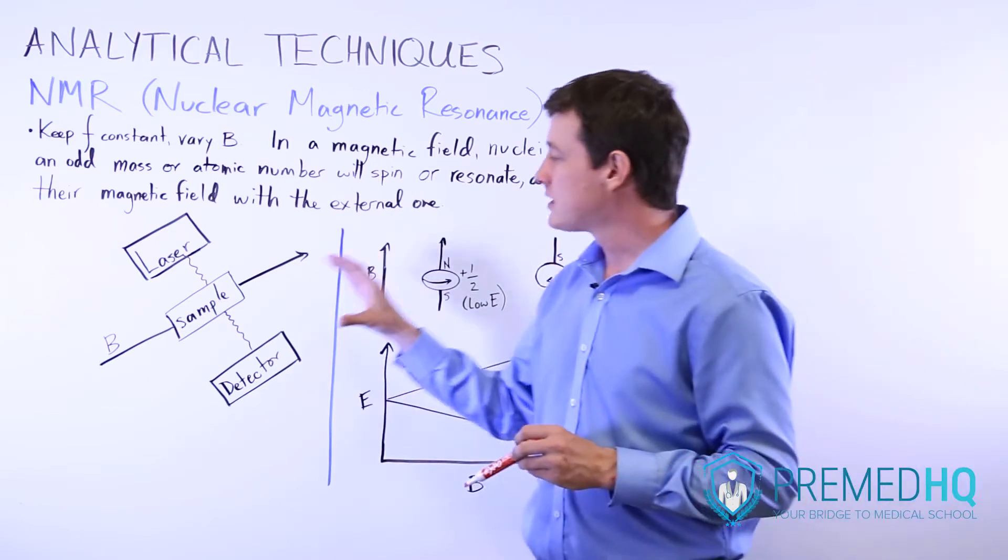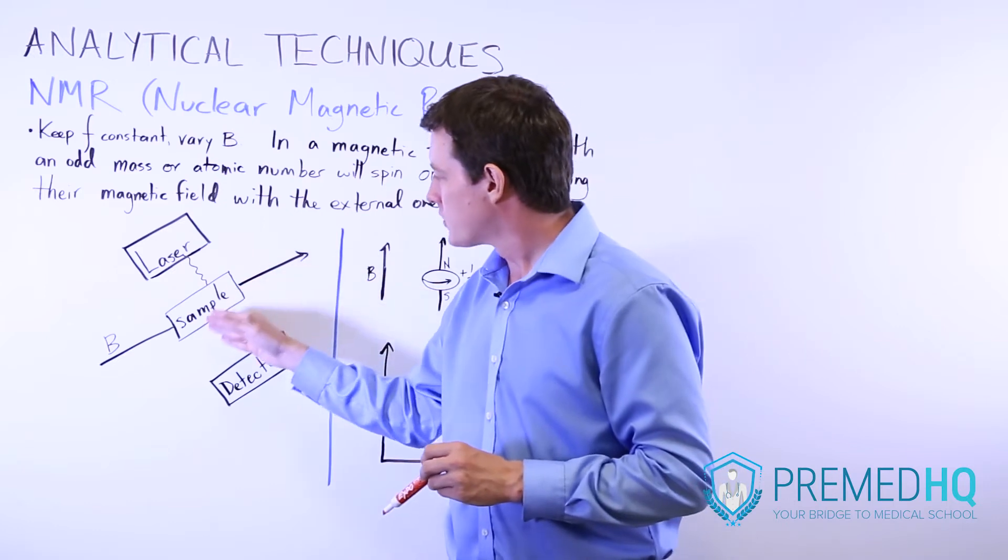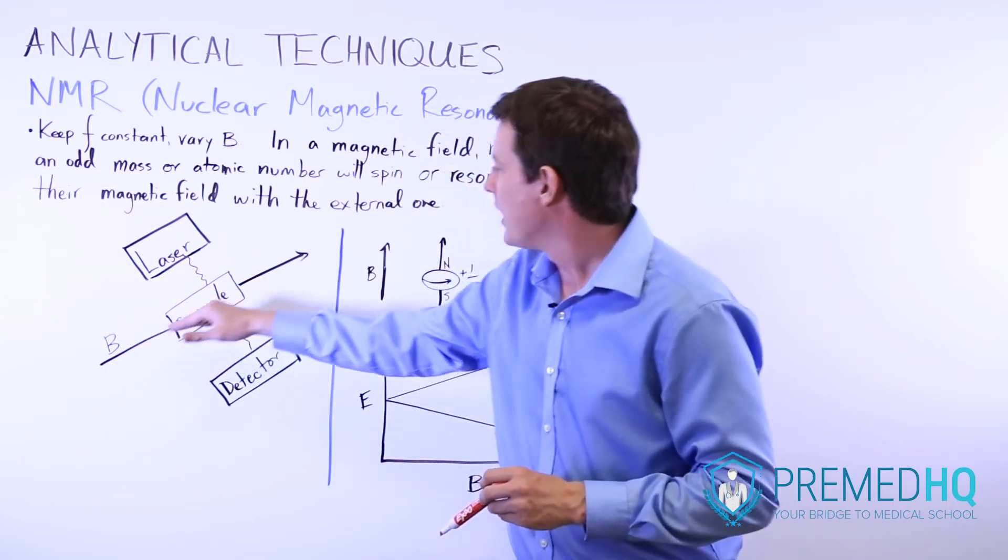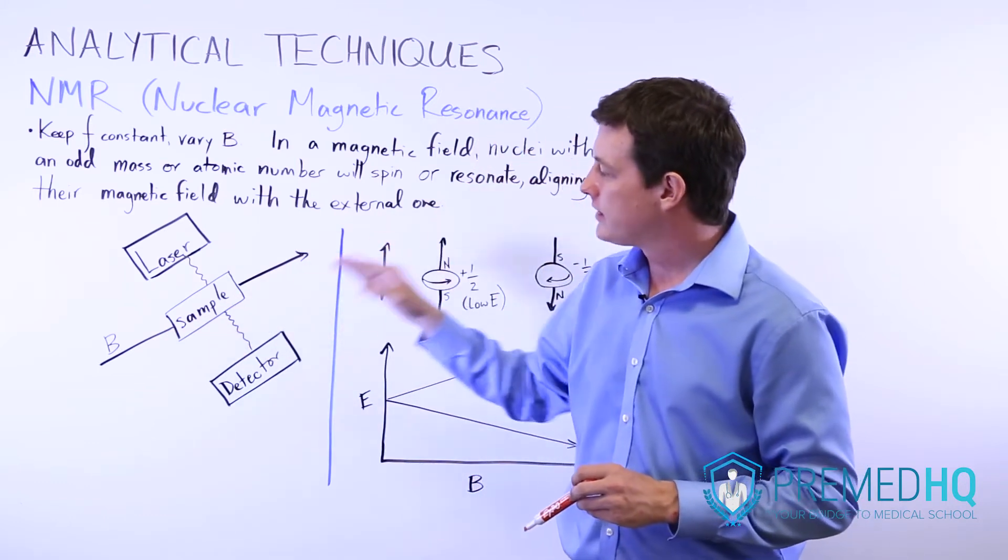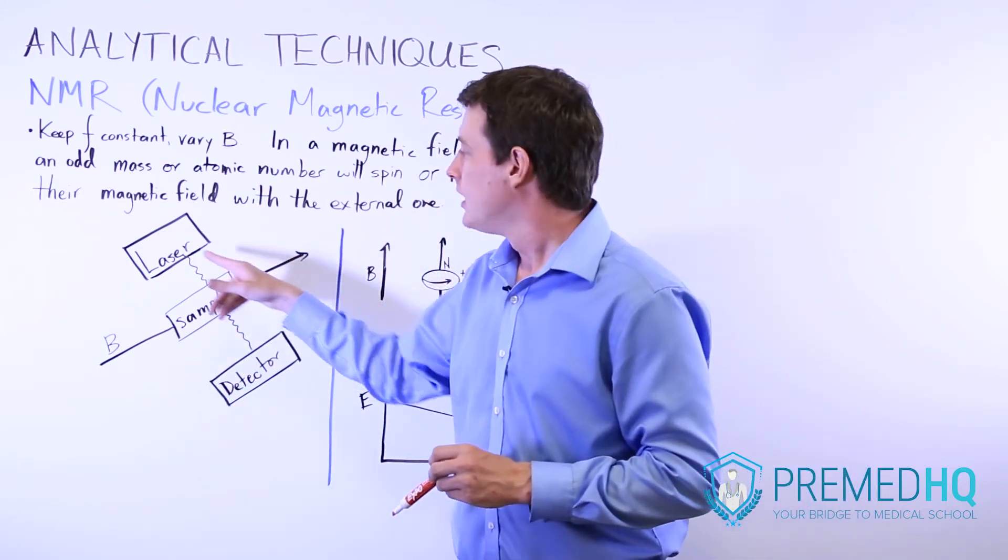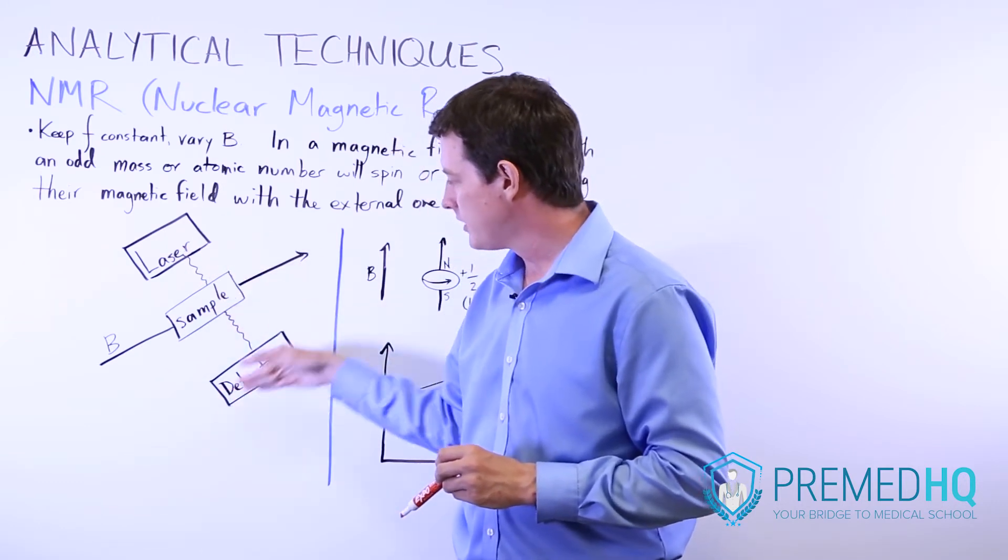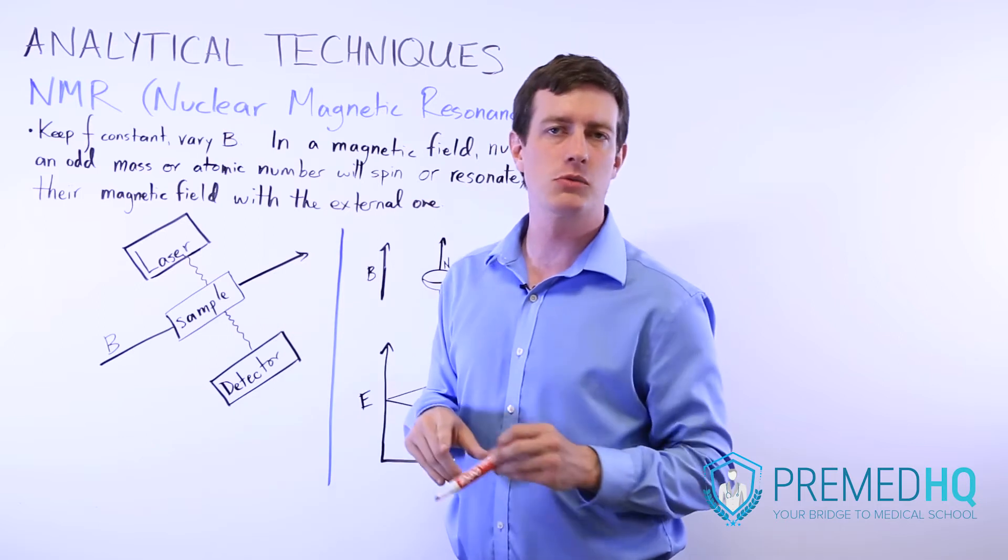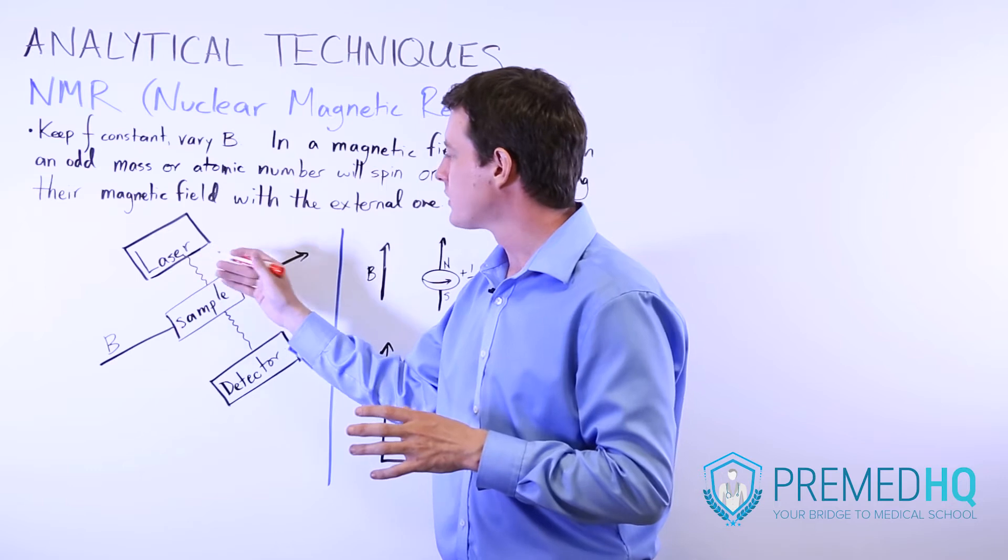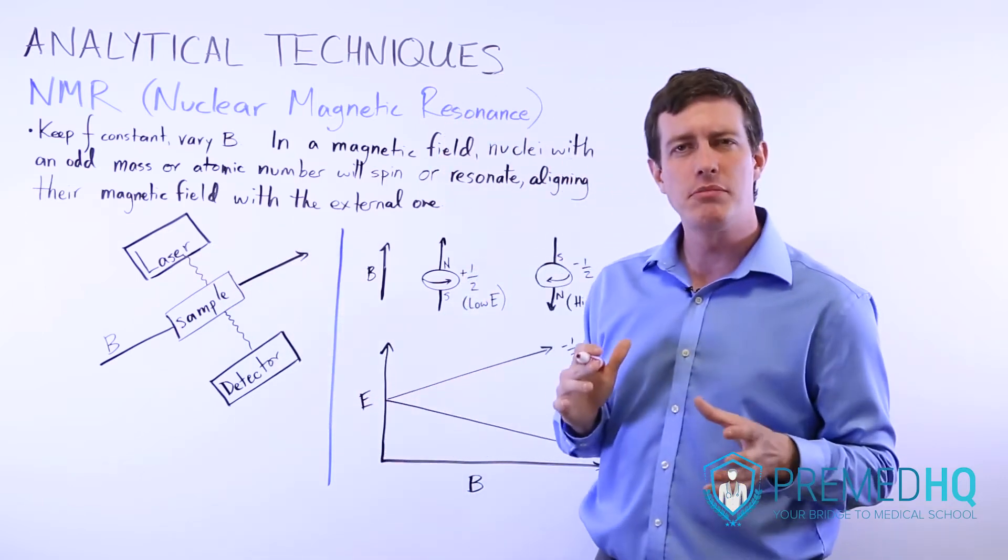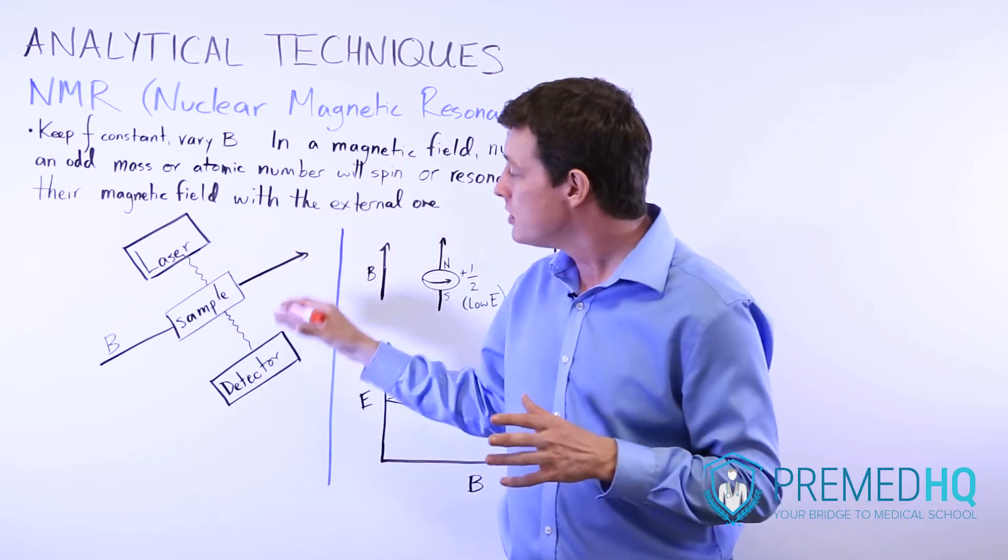And so the way that you set up an NMR environment is essentially you take your sample and you produce a magnetic field moving in some direction through it. At the same time as you're doing that, you're going to be producing a laser that you're shooting through the sample and it's going to hit a detector, and the detector will tell you whether the laser made it through the sample or whether the photon or the laser was used up in the process.